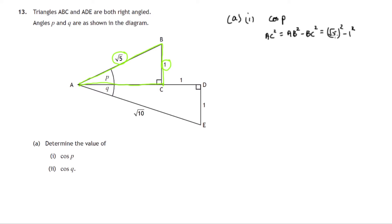So root 5 squared is 5, 1 squared is 1, 5 minus 1 is 4. So that means AC is the square root of 4, which is 2. So there's a missing length, AC is 2. So cosine of P is equal to adjacent over hypotenuse 2 divided by root 5. So there's our first part of part A.